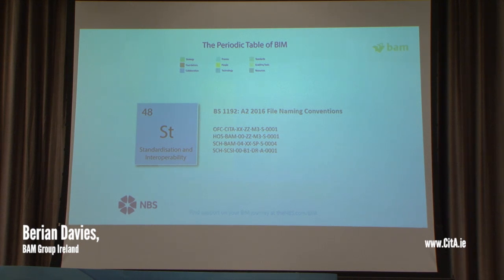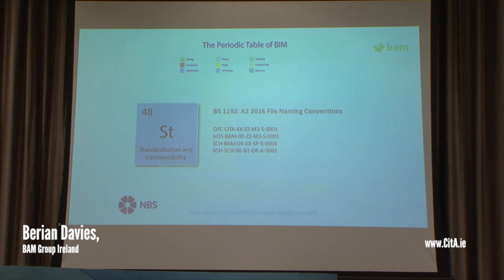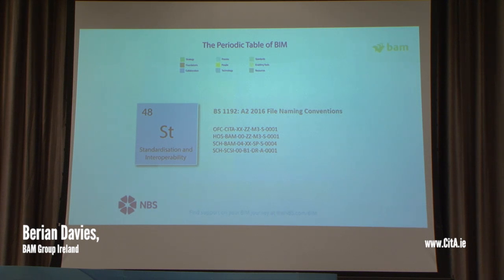To begin with, element 48 of the chart: standardisation and interoperability. I believe this is a cornerstone of BIM. It's essential for everybody to maximise the benefits of using BIM by adopting standards. One of the key benefits of BIM is that we, as an industry, reduce costs by streamlining processes and becoming more efficient. Standardisation ensures that when we create information during the construction process, we don't lose it when it's passed from one party to another, allowing information to be used and enhanced right through the life cycle of projects.